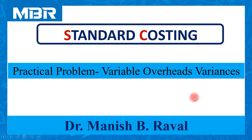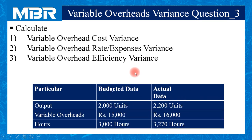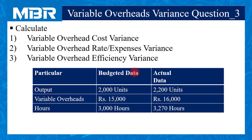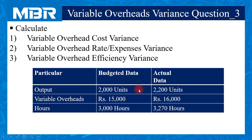Before discussion of the solution, let us try to understand the question first. We need to calculate: variable overhead cost variance, variable overhead rate or expenses variance, and variable overhead efficiency variance. We have information related to this question in a tabular format with budgeted data and actual data.